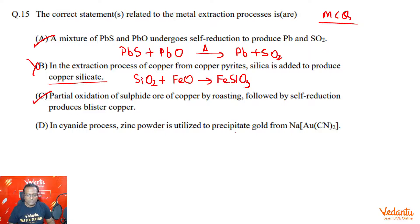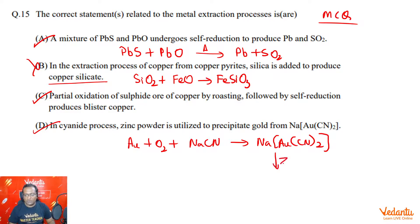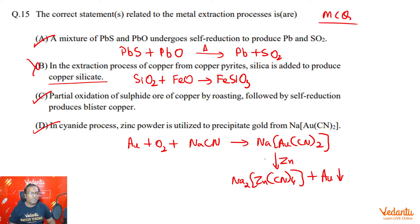In the cyanide process, zinc powder is utilized to precipitate gold from Na[Au(CN)₂]. Absolutely correct — we study this in the MacArthur-Forest cyanide process, where gold is dissolved using O₂ and NaCN to produce Na[Au(CN)₂], and this then undergoes a displacement reaction with zinc, forming Na₂[Zn(CN)₄] and gold is precipitated out. So the correct answers here are A, C, and D.